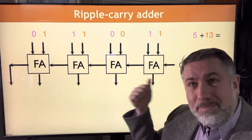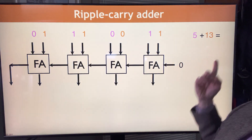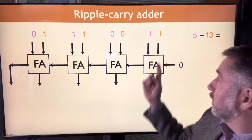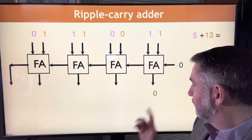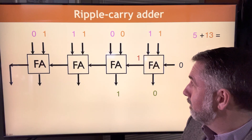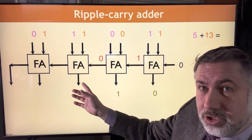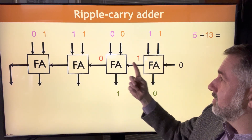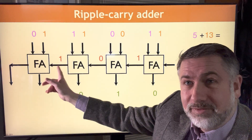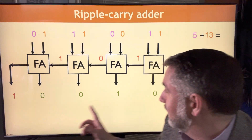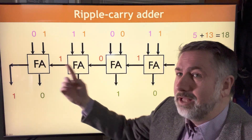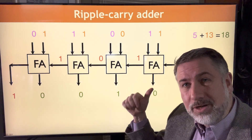First, let's remember what a ripple carry adder looks like. We start with two numbers — say five plus thirteen. Each bit slice depends on the carry-in from the previous bit slice. So first: one plus one is two, which is zero, carry the one. Then zero plus zero with a carry-in of one gives us one. Then one plus one is zero, carry the one. We had to wait for each stage to complete before proceeding. Finally one plus zero, but because we've got a carry-in, now it's two — zero, carry the one — giving us 16 plus 2 equals 18, which is what we expect. The carry ripples from full adder to full adder; we have to wait for all previous carries before we can proceed.